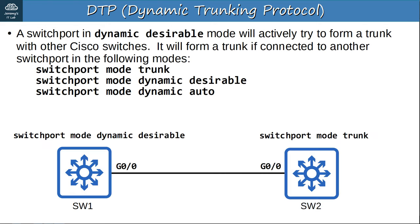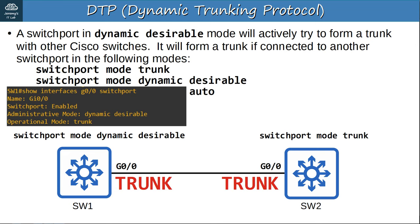Switch 1 and Switch 2 are connected via their G0/0 interfaces. SW1's G0/0 is in dynamic desirable mode, and SW2's G0/0 is manually configured as a trunk, so both will agree to operate as trunks. The 'show interfaces G0/0 switchport' command shows the administrative mode is dynamic desirable and the operational mode is trunk, because SW2's interface is a trunk and SW1's became a trunk too thanks to DTP negotiation.